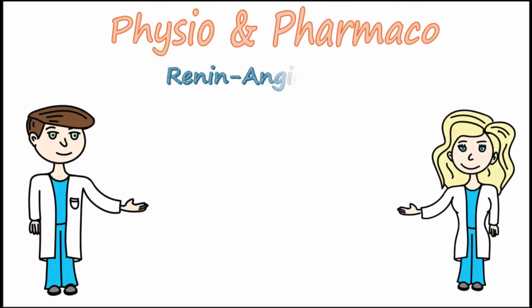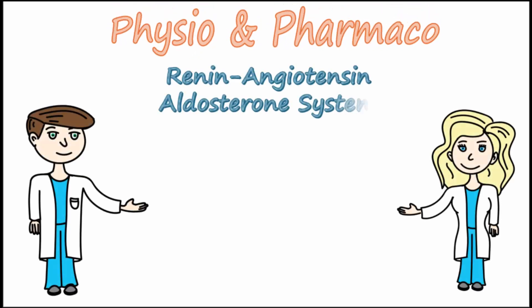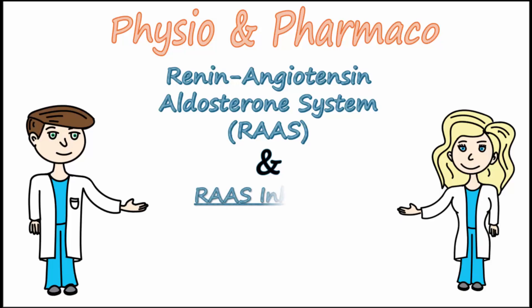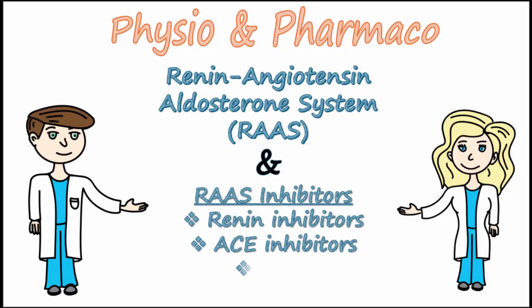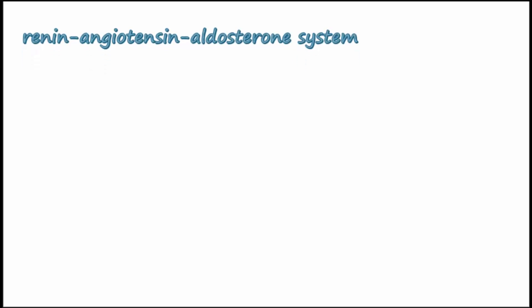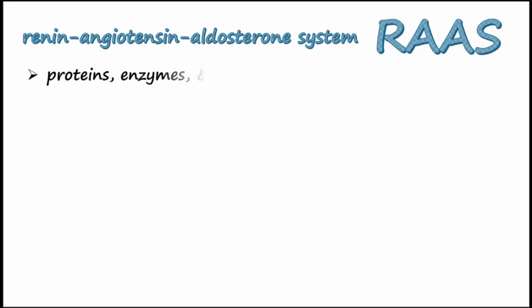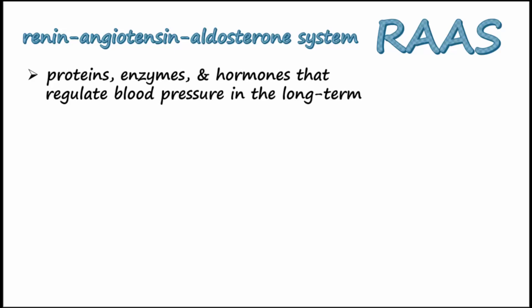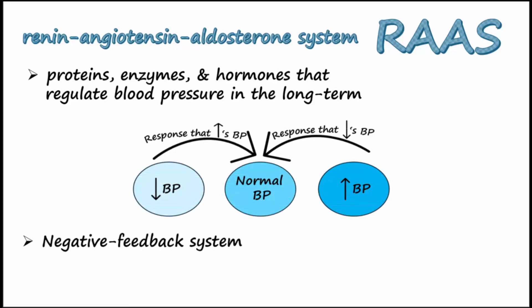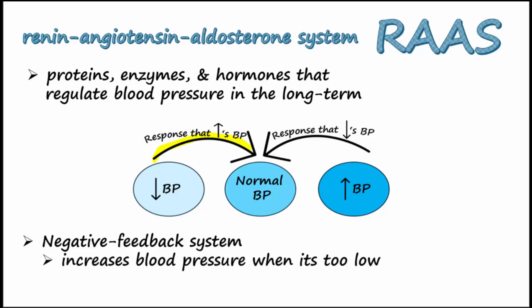The topic today is the renin-angiotensin-aldosterone system and drugs that inhibit this system, called RAS inhibitors. The renin-angiotensin-aldosterone system, abbreviated RAS, is made up of proteins, enzymes, and hormones that regulate blood pressure in the long term. RAS is an example of a negative feedback system in the body that increases blood pressure when it's too low, or decreases blood pressure when it's too high.